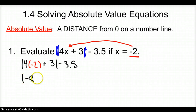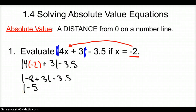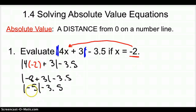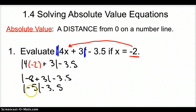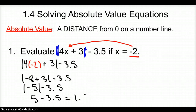Here we have negative 8 plus 3, minus 3.5. Continue simplifying what's inside the absolute value. Remember what we said about distance — can we have a negative absolute value? We cannot. So we take this negative 5 and make it a positive 5 when it comes out of the absolute value, minus 3.5. That gives us 1.5 for your answer.